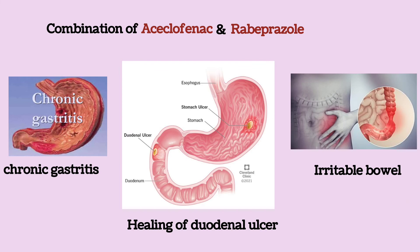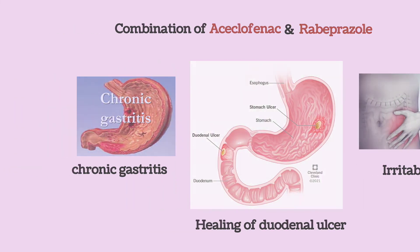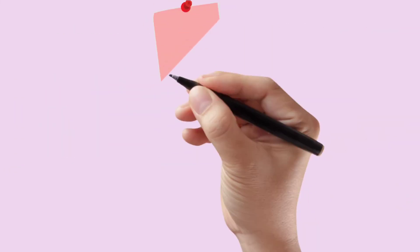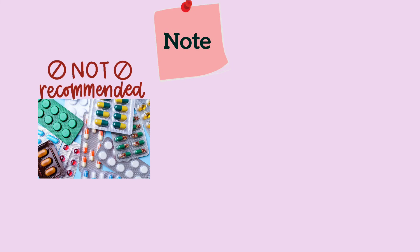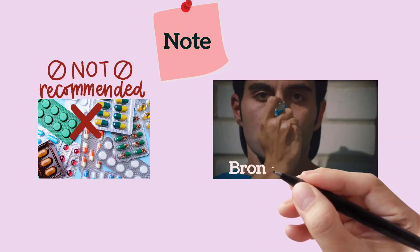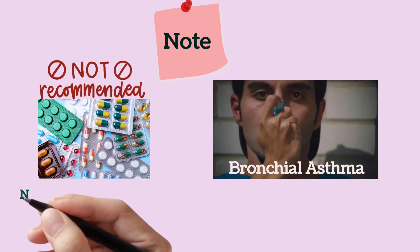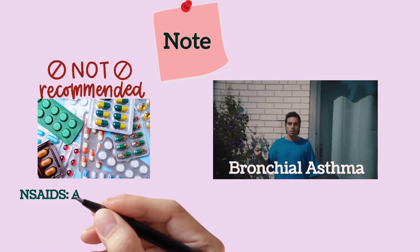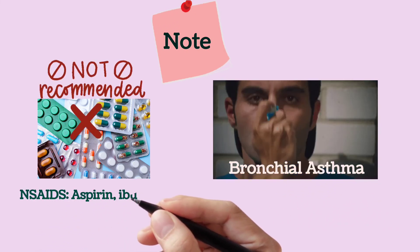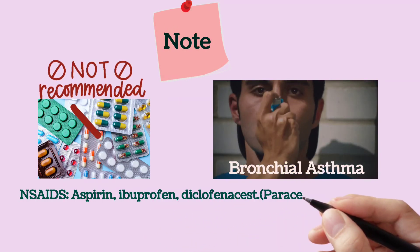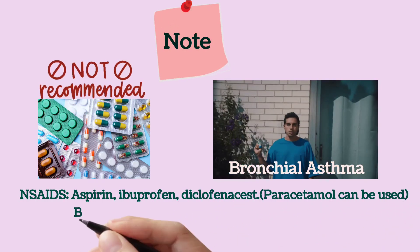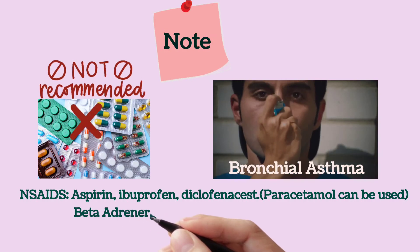Friends, these are not all the combinations — many more are there, given according to the patient's diagnosis. One important note I also want to include: some drugs should be avoided in patients with bronchial asthma, like NSAIDs — aspirin, ibuprofen, diclofenac, etc. Paracetamol can be used, as can beta-adrenergic blockers and cholinergic agonists.